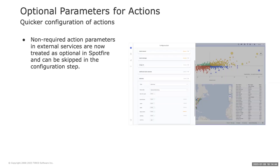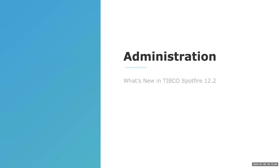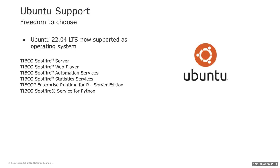We also have optional parameters for actions, making it possible to skip parameters that may not be necessary or required by the external service called by the action. On the administration and deployment side, Spotfire 12.2 adds support for Ubuntu. Starting with Spotfire 12.0 LTS, all Spotfire services can run on Linux — beginning with Debian — and now with 12.2 we support Ubuntu, specifically Ubuntu 22.04 LTS.